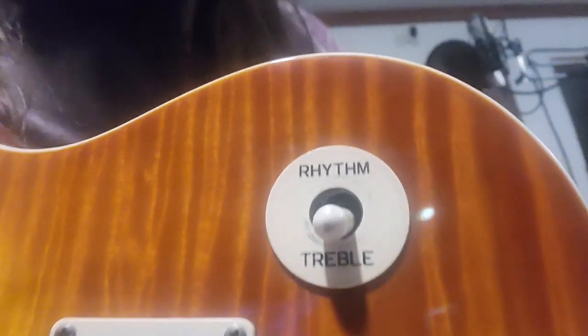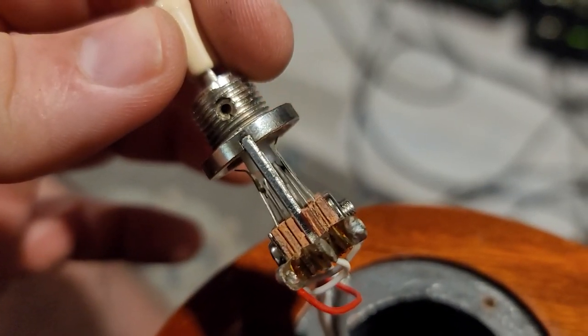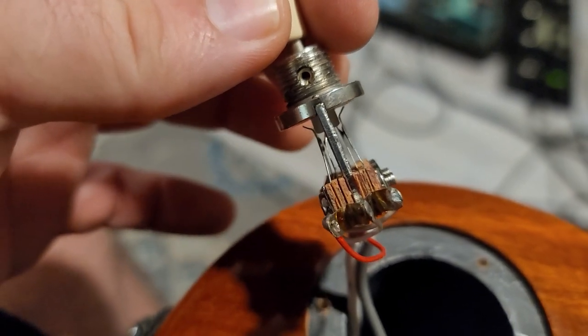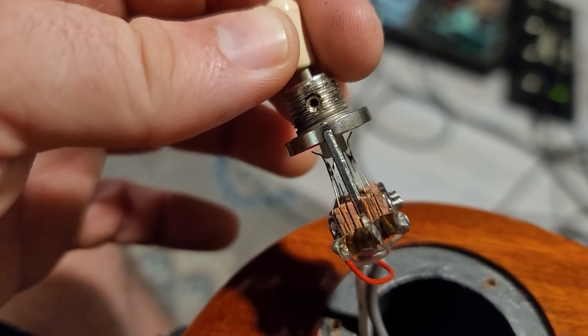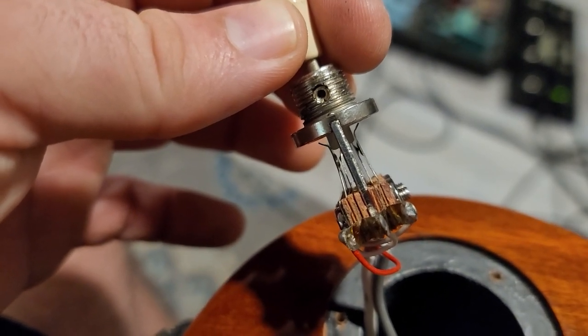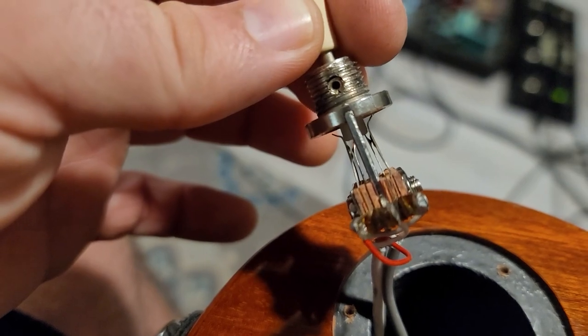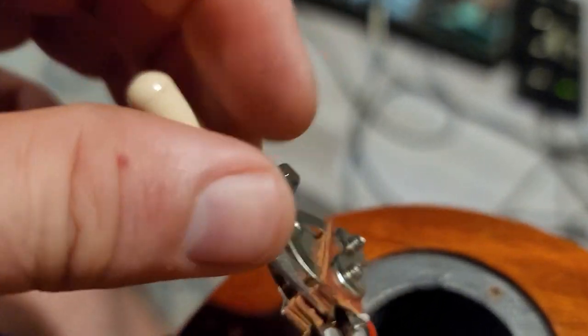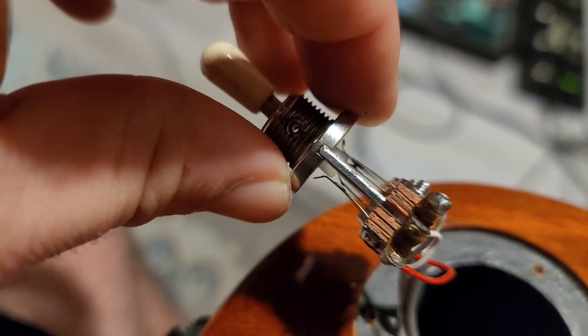The way this switch works is there are two sets of metal contacts and the actual switch mechanism moves a set of the contacts out of the way. One half of the contact, the metal, gets bent out of the way, essentially opening the circuit. So what's happening in this case, I guess when my guitar fell...